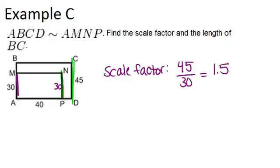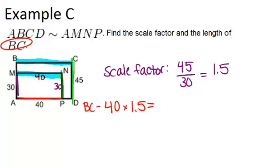Now if we know the scale factor is 1.5, that means each side in the larger rectangle is 1.5 times as big as its corresponding side in the smaller rectangle. So since AP is 40, that means that MN is also 40. And if we're looking to find BC, MN is the side which corresponds with BC. So all we need to do is take 40 times the scale factor of 1.5, and we'll figure out what BC is. Since 40 times 1.5 is 60, that means that BC equals 60.